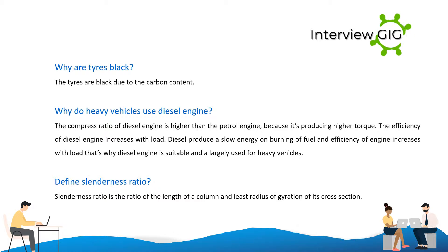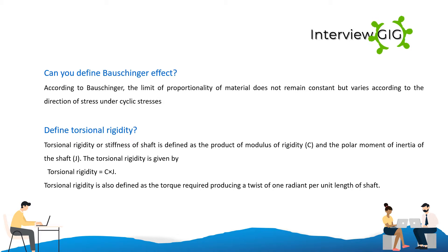Define slenderness ratio. Slenderness ratio is the ratio of the length of a column to the least radius of gyration of its cross section. Can you define the Bauschinger effect? According to the Bauschinger effect, the limit of proportionality of a material does not remain constant but varies according to the direction of stress under cyclic stresses.